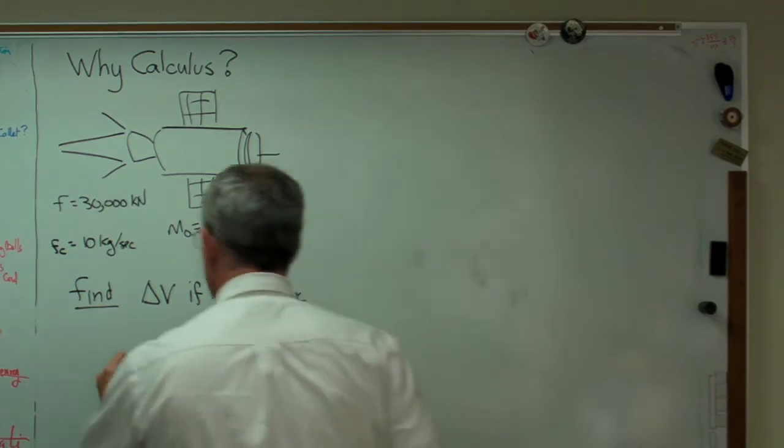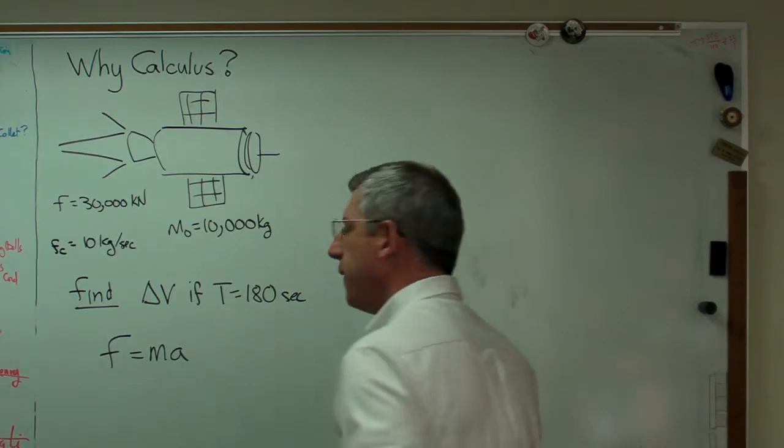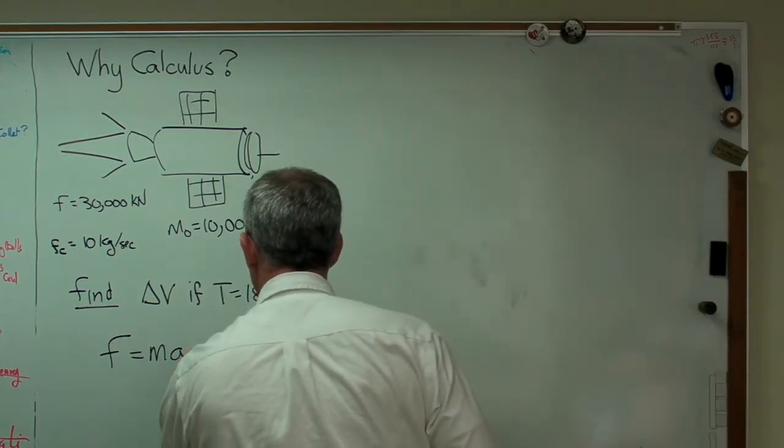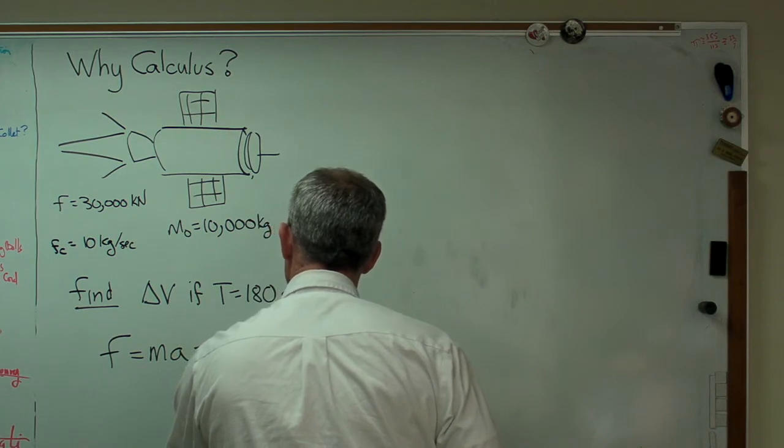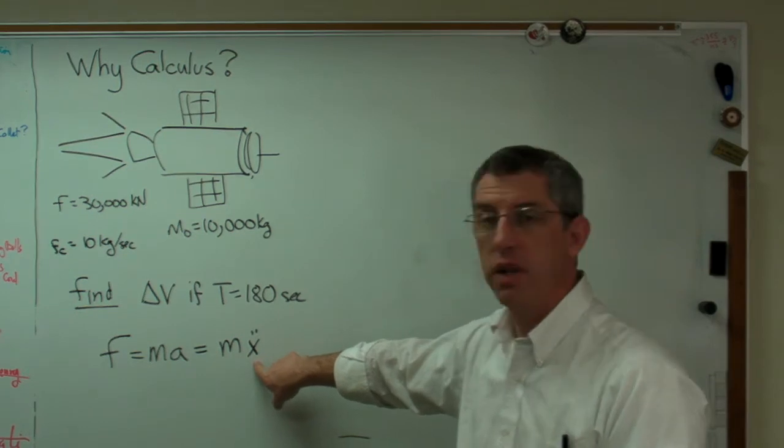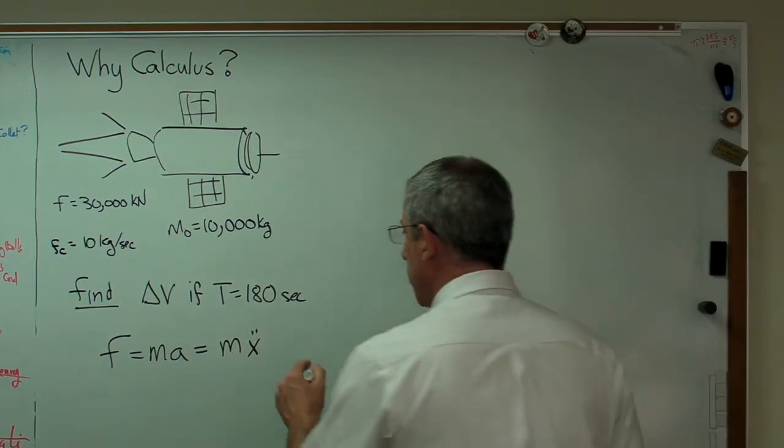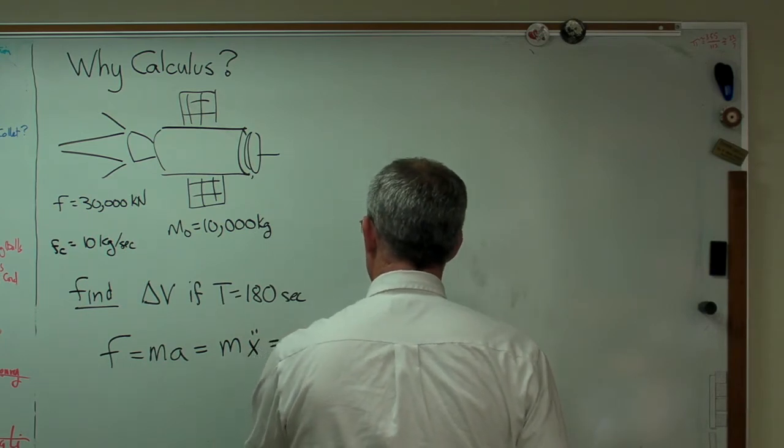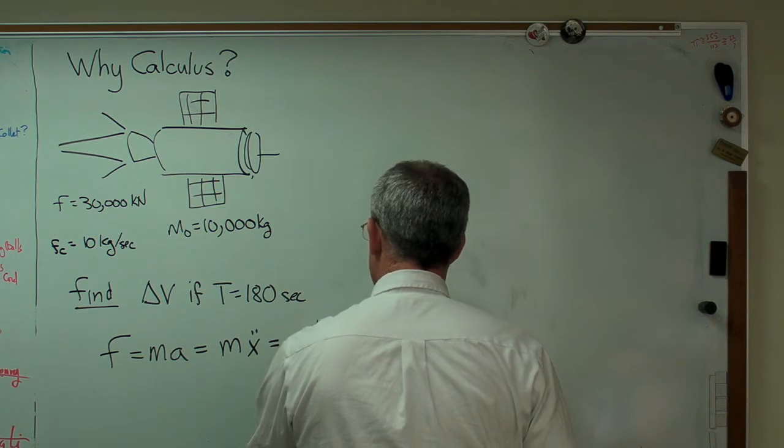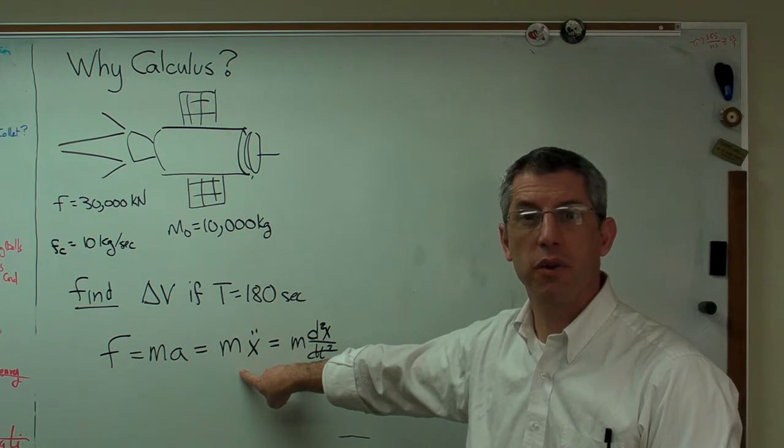We already know that F equals ma, right? Well that's not really what Newton wrote. He actually wrote something that was a little closer to this: F equals mass times the second derivative of position, which is acceleration. This is also equivalent to writing m d²x/dt². These two things both mean the same thing - these are just different ways of writing a second derivative, it's just a notational difference.